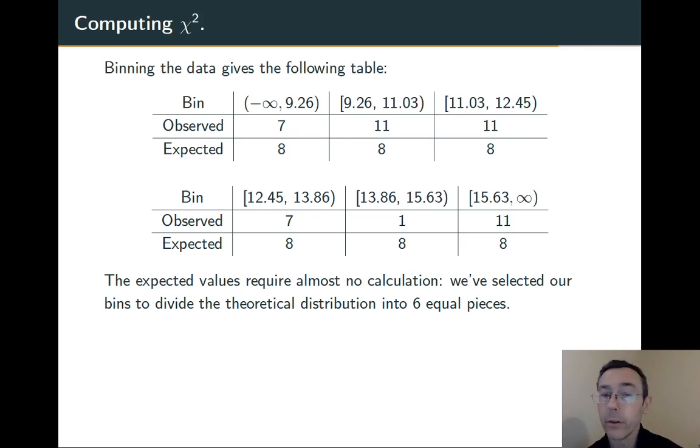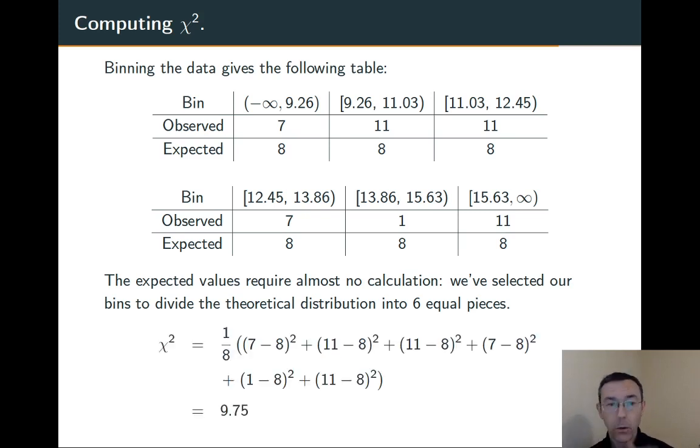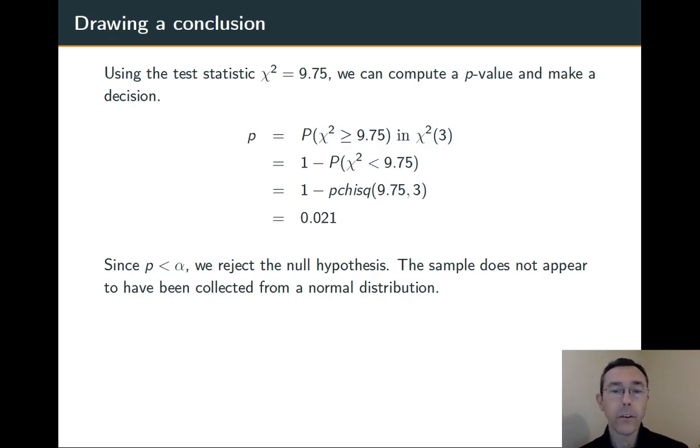Now we compute our chi-squared statistic in the usual way. We do the observed minus the expected, square it, and divide by the expected. Overall, we get 9.75. That's going to be our test statistic.